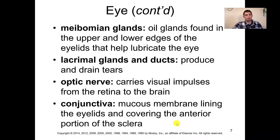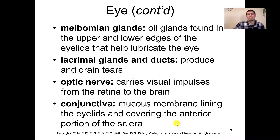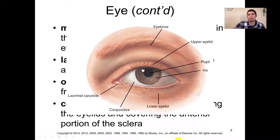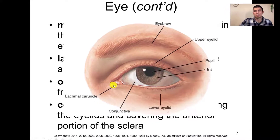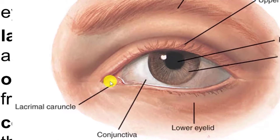A few more anatomical structures of the eye — looking at a couple of glands and ducts. The meibomian glands are oil glands found in the upper and lower edges of the eyelids to help lubricate. The lacrimal glands and ducts help produce and drain the tears. Here we can see the lacrimal duct in the inside corner of the eye.